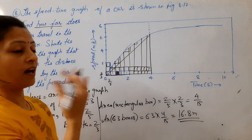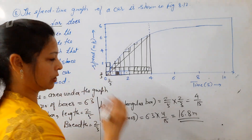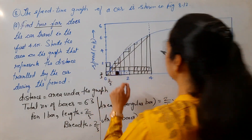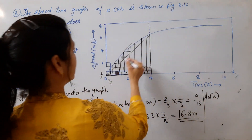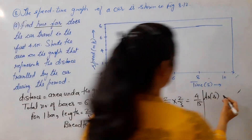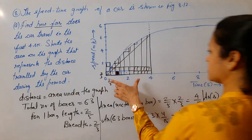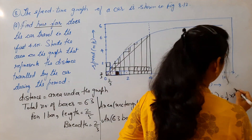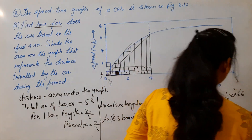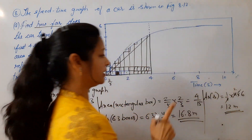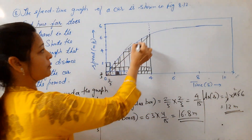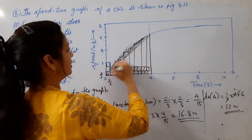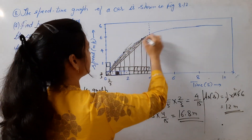In comparison, if we use the area of triangle method, we can see that some area is missing. Area of triangle is half times base times height. Base is 4 and height is 6, so area of triangle equals half times 4 times 6, which is 12 meters. So if we use the triangle method, we get only 12 meters — less than 16.8 meters — because that curved portion of the area is missing. So 16.8 meters is the better approximation.